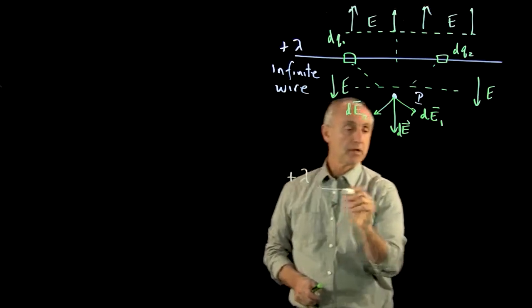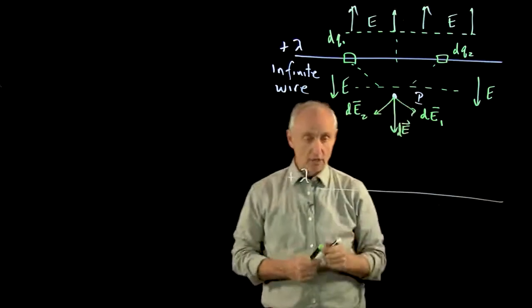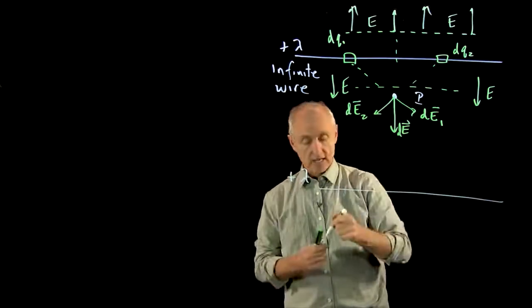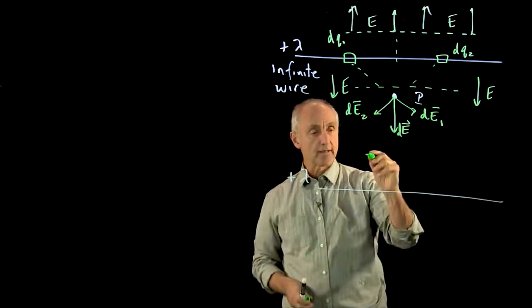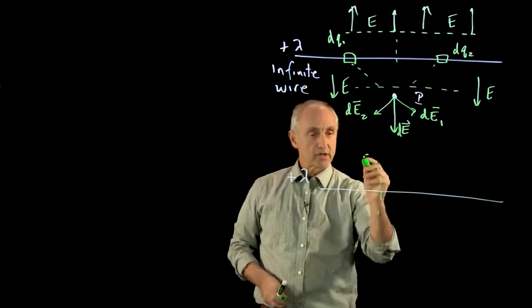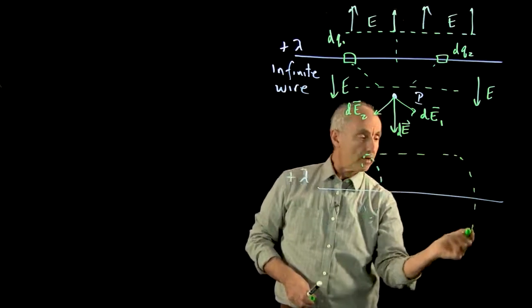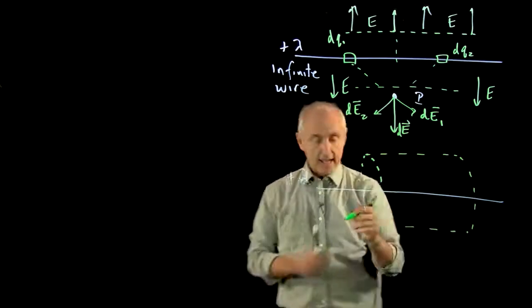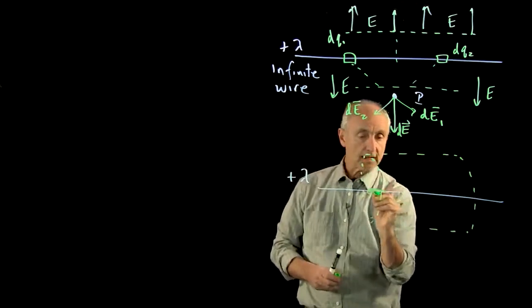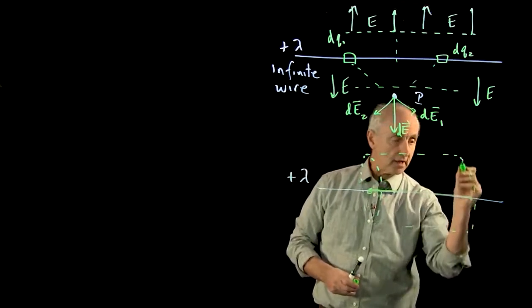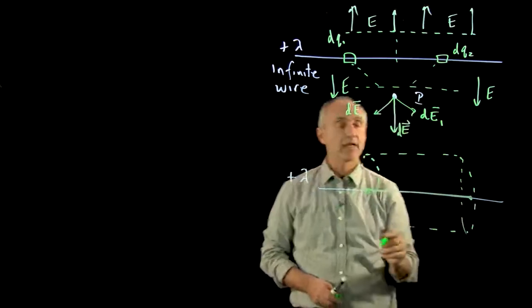So we have plus lambda. Here's our wire. What I want to choose is a Gaussian surface that is a cylinder that surrounds the wire. And the charge enclosed is here, inside this cylinder.